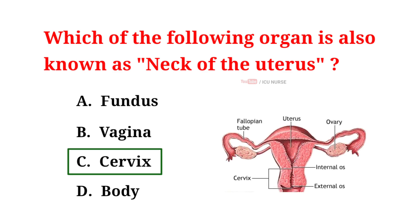The organ known as the neck of the uterus is called the cervix. It's a small, cylindrical-shaped passageway that connects the uterus to the vagina. The cervix has an important role in female reproductive health. It produces mucus that changes during the menstrual cycle, helping or hindering sperm's movement. During childbirth, the cervix dilates to allow the child's passage. Pap smears are done to check for cervical health and detect potential issues.